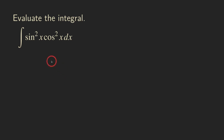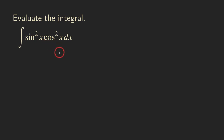Let's look at this trig integral. We have a product of two trig functions, and each function has a second power — sine squared x times cosine squared x. Since both powers are even, we cannot use the u-substitution method for powers of sine and cosine.